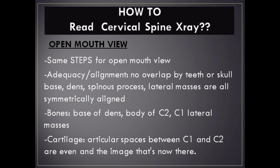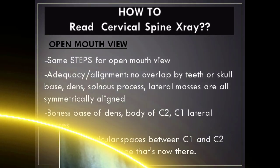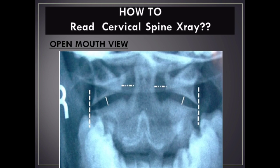Open Mouth View: Apply the same steps to the open mouth view. Check adequacy and alignment — no overlap by teeth or skull base. Assess the dens, spinous process, and lateral masses for symmetrical alignment. Check the base of the dens, body of C2, C1 lateral masses, and ensure the articular spaces between C1 and C2 are even.